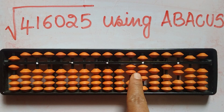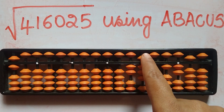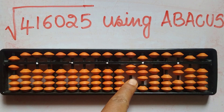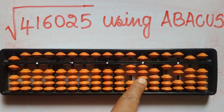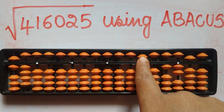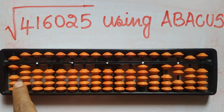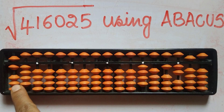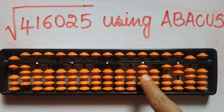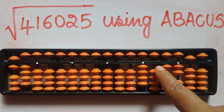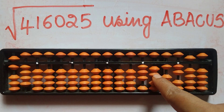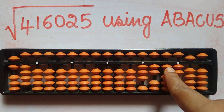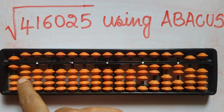Looking at the next two digits: 28. How many times does 6 go into 28? 6 fours are 24, and 6 fives are 30, so we take 4. Now 4 squared is 16, so we subtract half of 16, which is 8, from this rod — minus 8 — giving us the number 3, 2, 1, 2, 5.